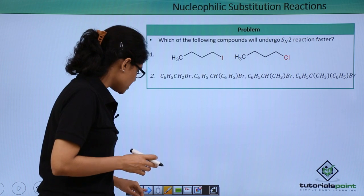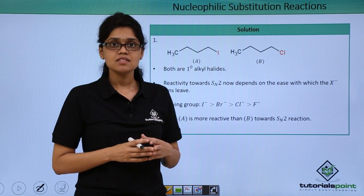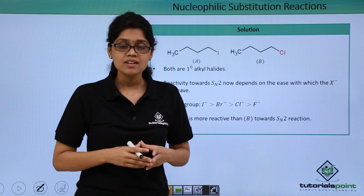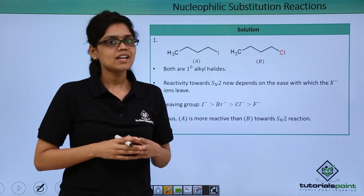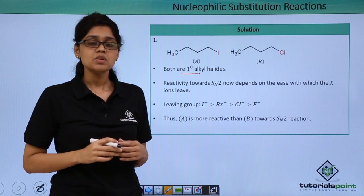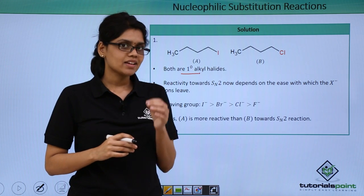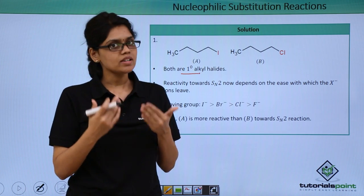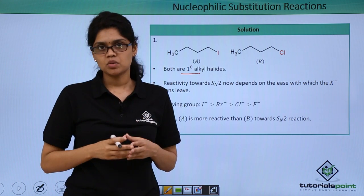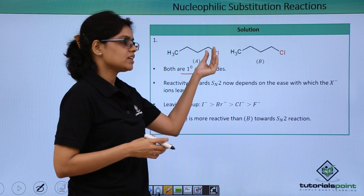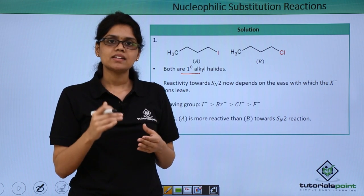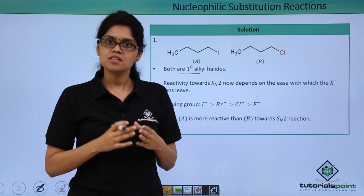In the first set of compounds you have two alkyl halides — one is an alkyl iodide and the second compound is an alkyl chloride. As we can see, both alkyl halides are primary in nature. Now we know that the reactivity of alkyl halides towards SN1 or SN2 reaction depends on how good a leaving group is — that is, how easily the halogen can leave the alkyl halide so that the nucleophile can attack and result in the substitution product.